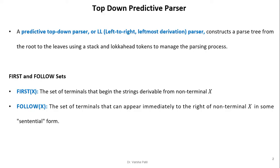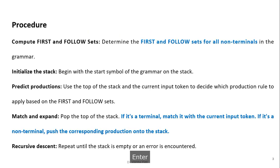First of X is the set of terminals that begin the strings derivable from non-terminal X. Follow of X is the set of terminals that can appear immediately to the right of non-terminal X in some sentential form. While solving problems, I will explain how to calculate the first and follow sets from a given grammar.